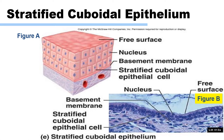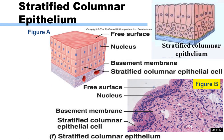Stratified cuboidal epithelial tissue functions as a protective tissue layer and lines the excretory ducts of the sweat glands and large ducts of excretory glands. Stratified columnar epithelial tissue has secretory and protective functions, and can be found in the eye and in the largest ducts of exocrine glands.